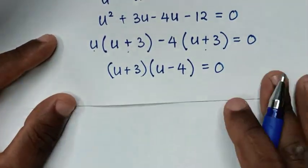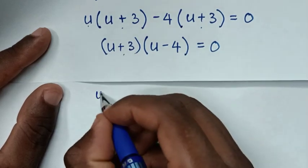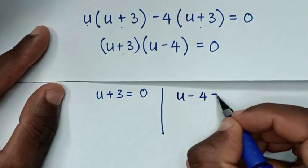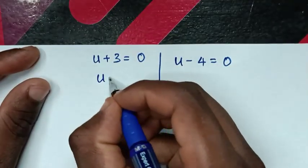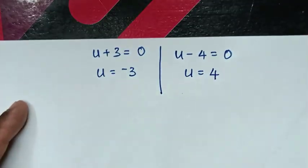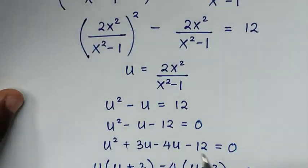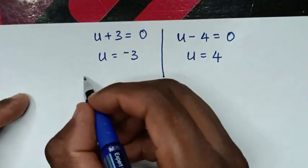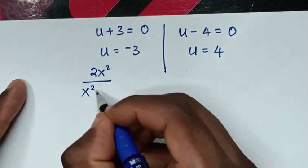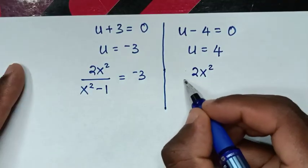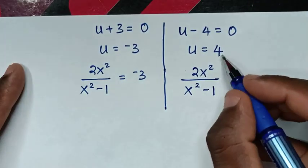From the factored equation we have two solutions: u + 3 = 0 giving u = -3, and u - 4 = 0 giving u = 4. Recalling that u = 2x²/(x²-1), we now substitute back. For the first solution: 2x²/(x²-1) = -3. For the second solution: 2x²/(x²-1) = 4.